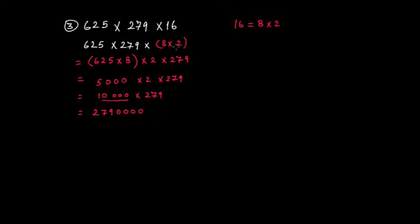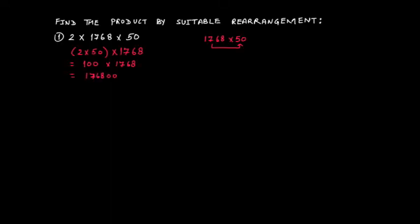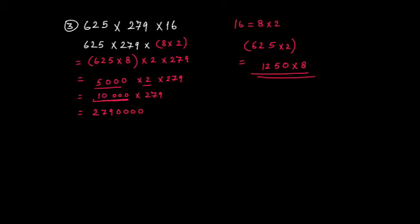You might wonder why we didn't just group 625 and 2 together. Even that case is possible — 625 × 2 = 1250 and then × 8 = 10,000 — but it's a little bit longer. Grouping 625 and 8 directly gives 5000 more easily, and then × 2 gives 10,000 quickly. In all these problems, the trick is to group together numbers that give multiples of tens, hundreds, or thousands.